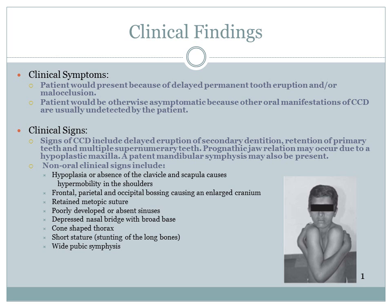Patients typically present because of delayed permanent tooth eruption and/or malocclusion, and are otherwise asymptomatic, as other oral manifestations are usually undetected. Clinical signs include delayed eruption of secondary dentition, retention of primary teeth, and multiple supernumerary teeth. Prognathic jaw relation may occur due to a hypoplastic maxilla, and a patent mandibular symphysis may also be present.